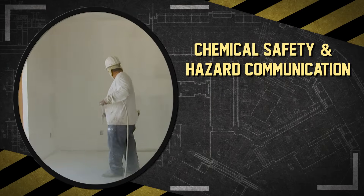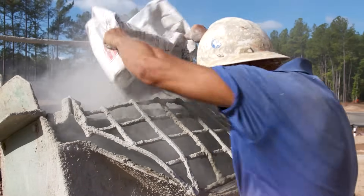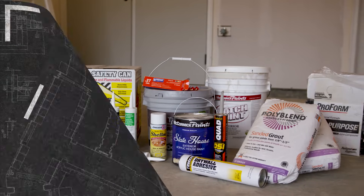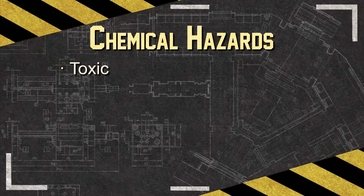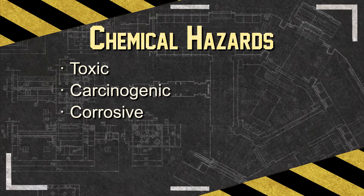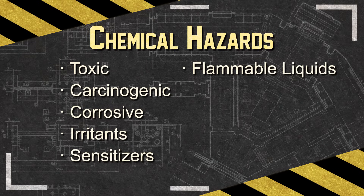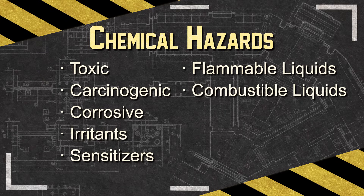Hazardous chemicals can be found practically everywhere on the job site and in many commonly used products. There are several different types of chemical hazards: toxic chemicals that can have a poisonous effect on a person; carcinogenic chemicals believed to cause cancer after exposure; corrosive chemicals causing visible destruction or alterations; irritants causing an inflammatory effect; and sensitizers causing an allergic reaction in tissues. There are also flammable liquids that emit vapors that may catch fire, and combustible liquids that combust after being exposed to high temperatures.